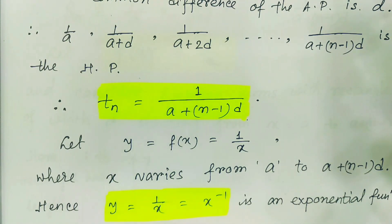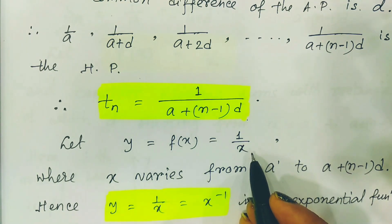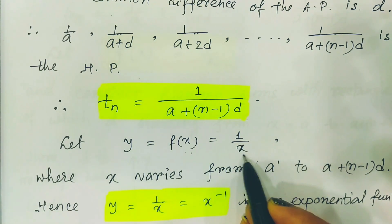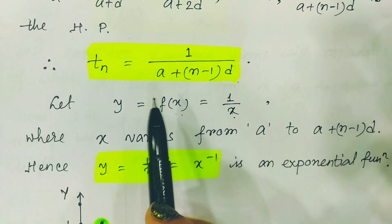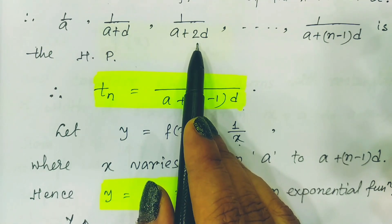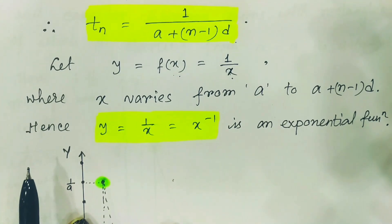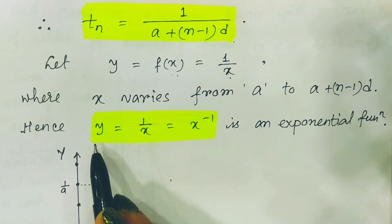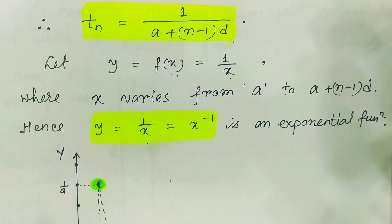Now if we replace tn by y, and let the entire denominator expression be x, then y equals f(x) equals 1/x, where x varies from a to a plus (n minus 1) times d. Initially x equals a, then a plus d, then a plus 2d, and so on, up to a plus (n minus 1)d. So the HP corresponds to the function y equals 1/x, which is an inverse function — and this is also a type of exponential function.